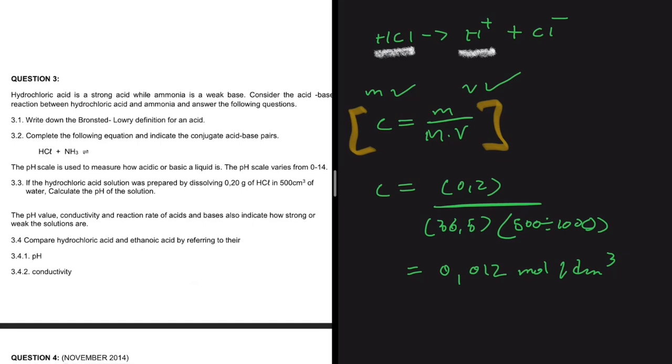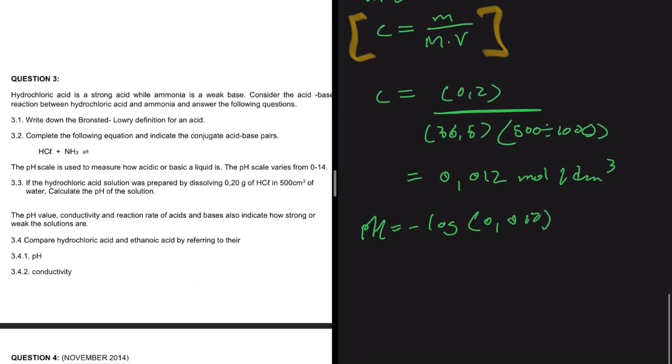So we have the concentration of HCl and consequently the concentration of H⁺. So now we can go ahead and say that the pH = -log(0.012). And then if you put that in your calculator, you're going to get a pH of 1.92.